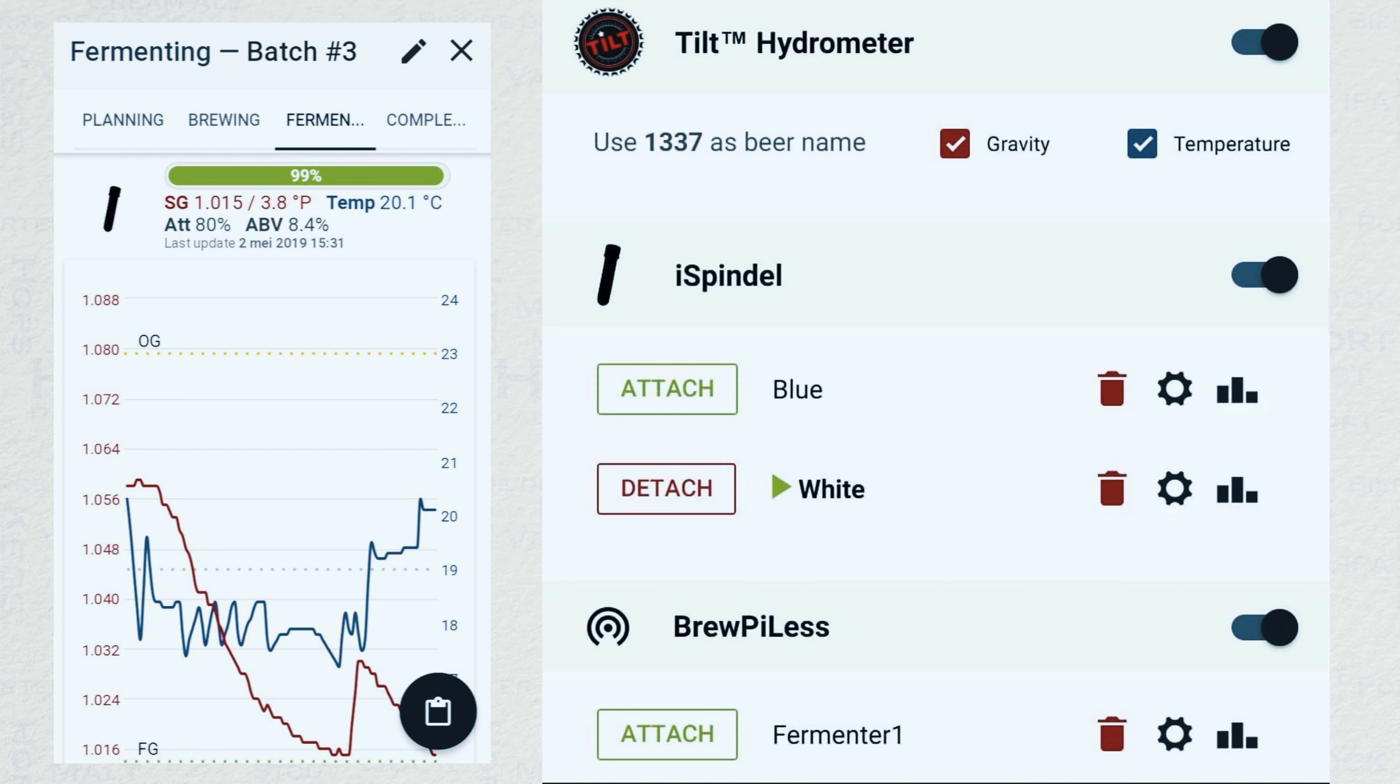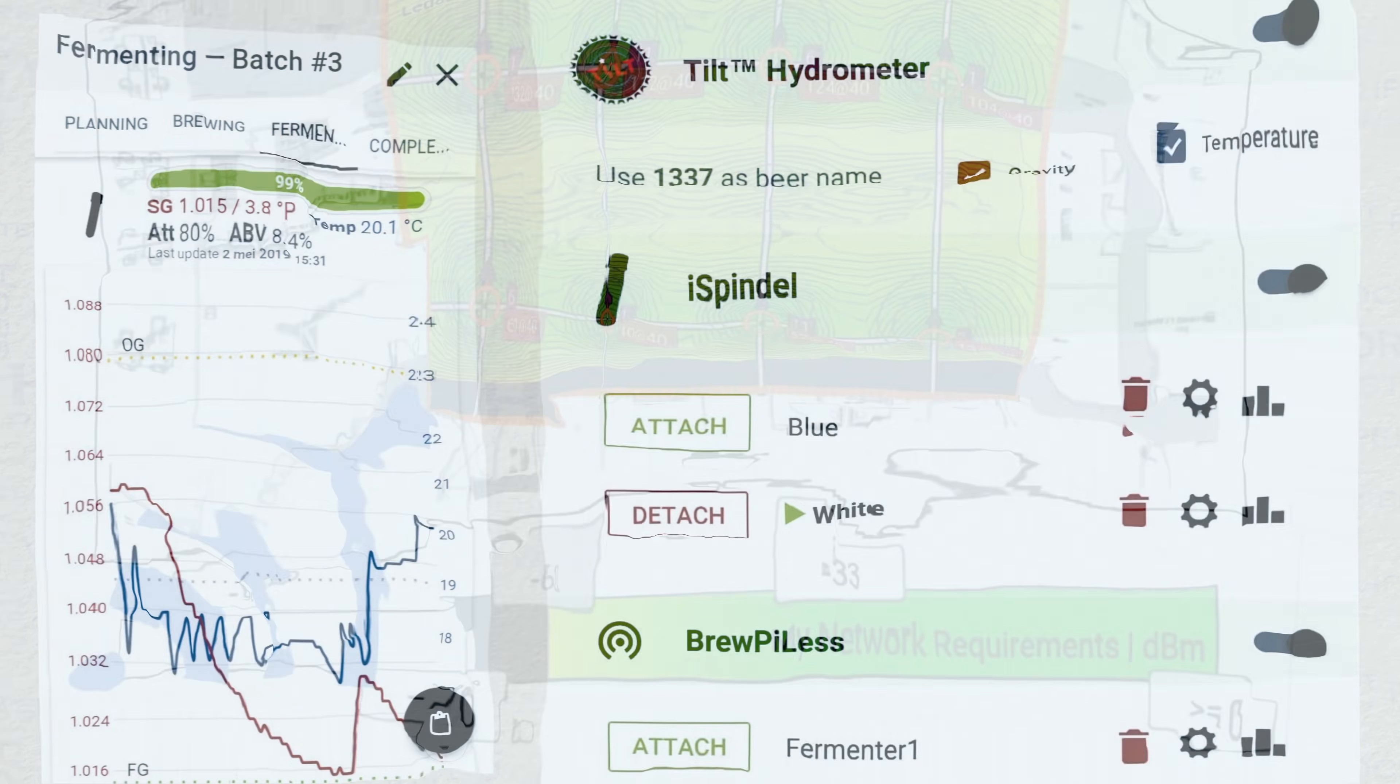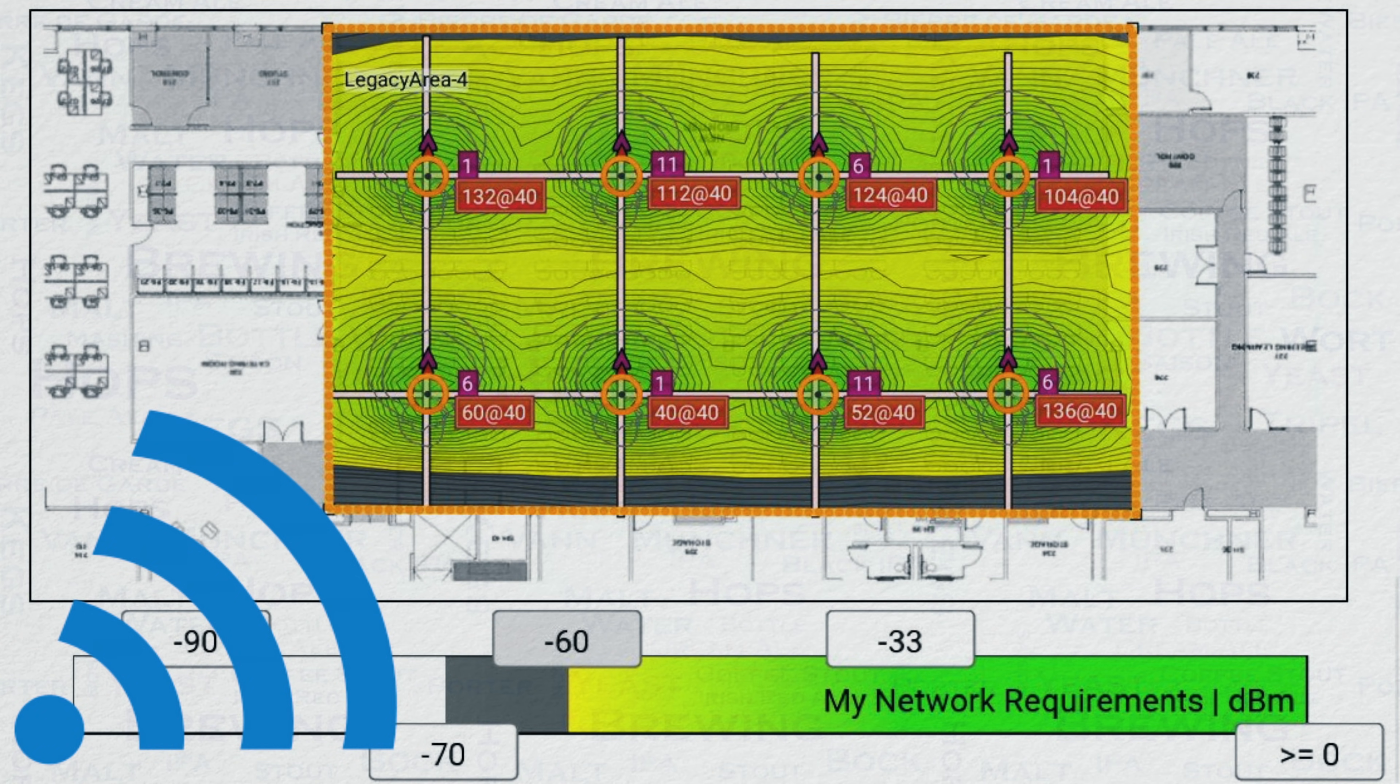There is a capital difference between the tilt and the iSpindle though, and that is that it is not communicating by Bluetooth, but actually by Wi-Fi. I have a mesh Wi-Fi network in my house with good coverage, so this did not present a problem for me. Just be sure that the area you have for fermentation has reasonable Wi-Fi signal, and all will be good.